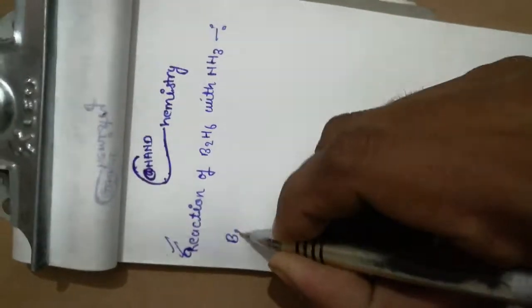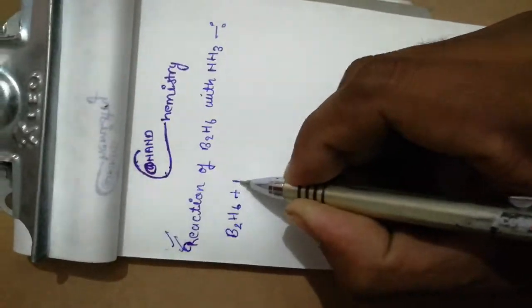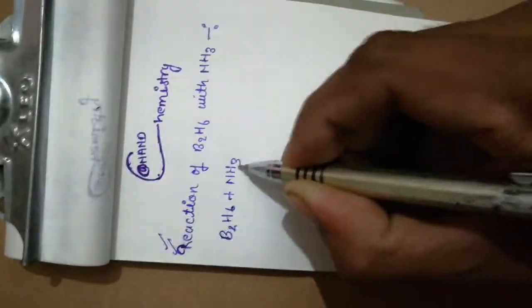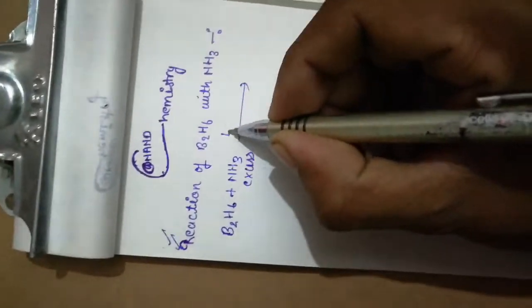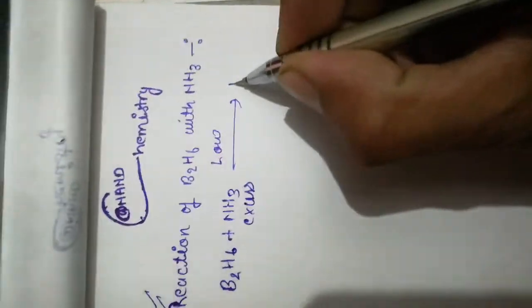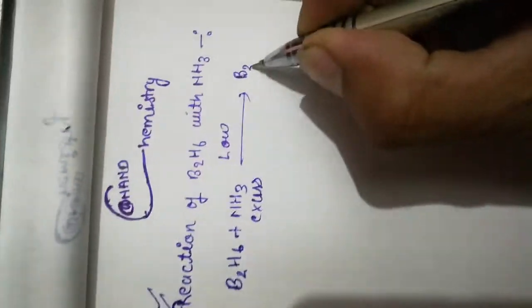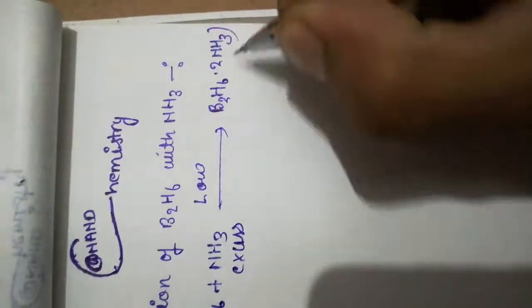Now let's discuss the reaction. First of all, we take B2H6 molecule with excess Ammonia molecule. The temperature is low. At low temperature, the product is B2H6·NH3.